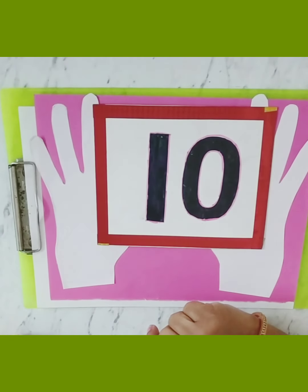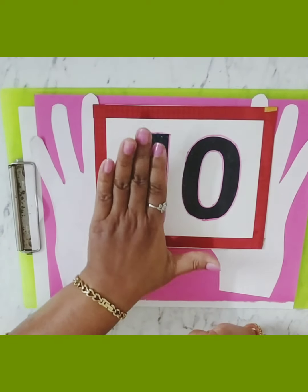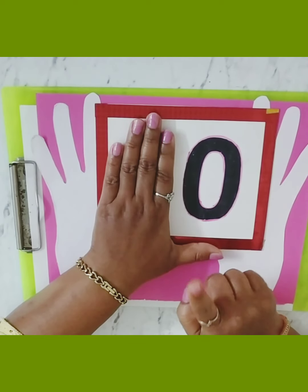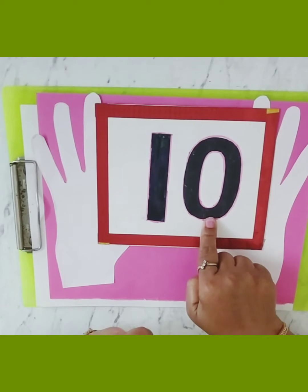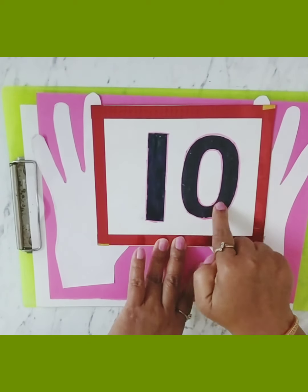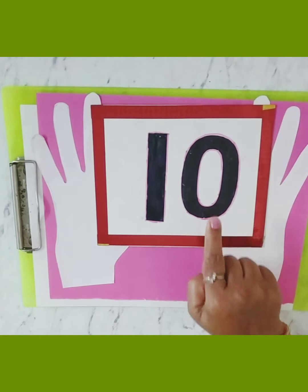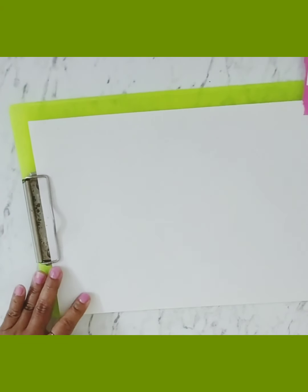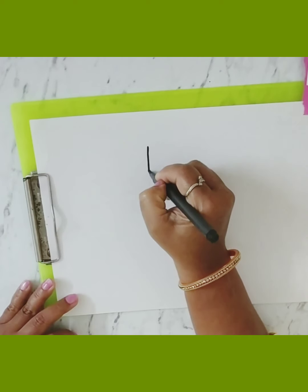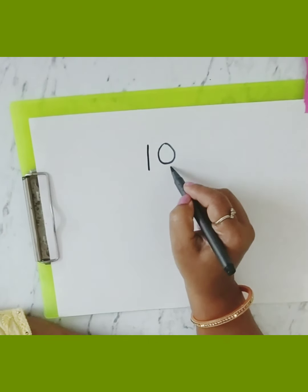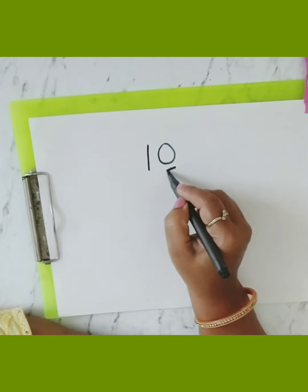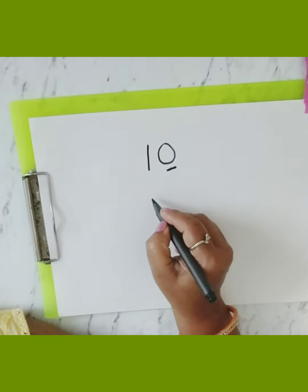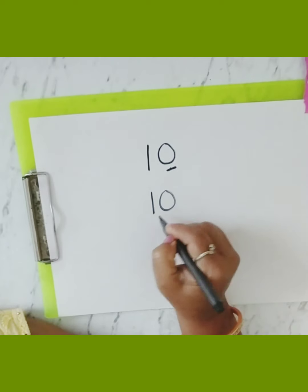Now, 0 ka concept pehle sikhaya tha, hai na? Jab 0 single hoga, akela hoga, tab 0 ki koi value nai hoti. But jab oh kisi number ke saath aata hai, aur kisi number ke right hand side mein aata hai, tau uski value increase ho jaati hai. Tau jab ye 1 ke right hand side mein aaya, tau ye ban gaya number 10.